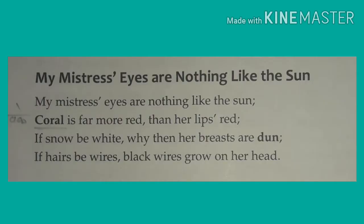So let us look at this poem from a critical point of view so that you will be able to enjoy it and learn so many things. I hope all of you have your textbooks with you. Let us look at the first stanza — I am going to read out Quatrain 1: 'My mistress' eyes are nothing like the sun. Coral is far more red than her lips' red. If snow be white, why then her breasts are dun. If hairs be wires, black wires grow on her head.'